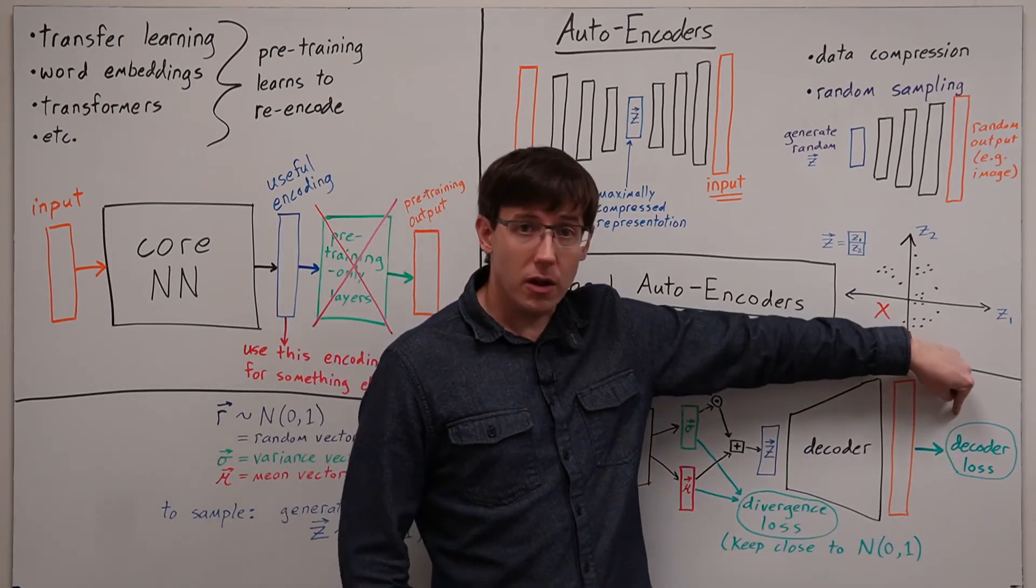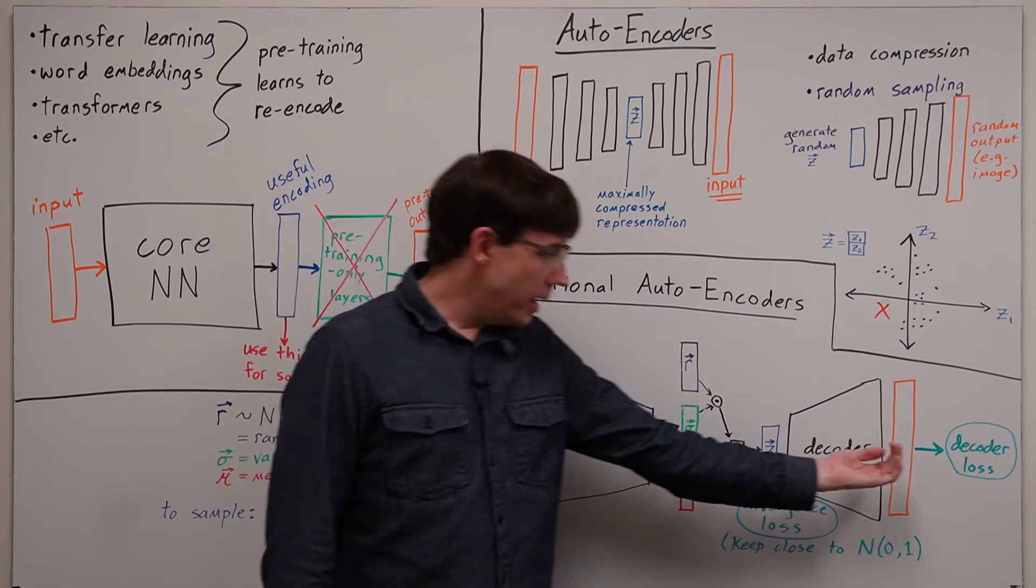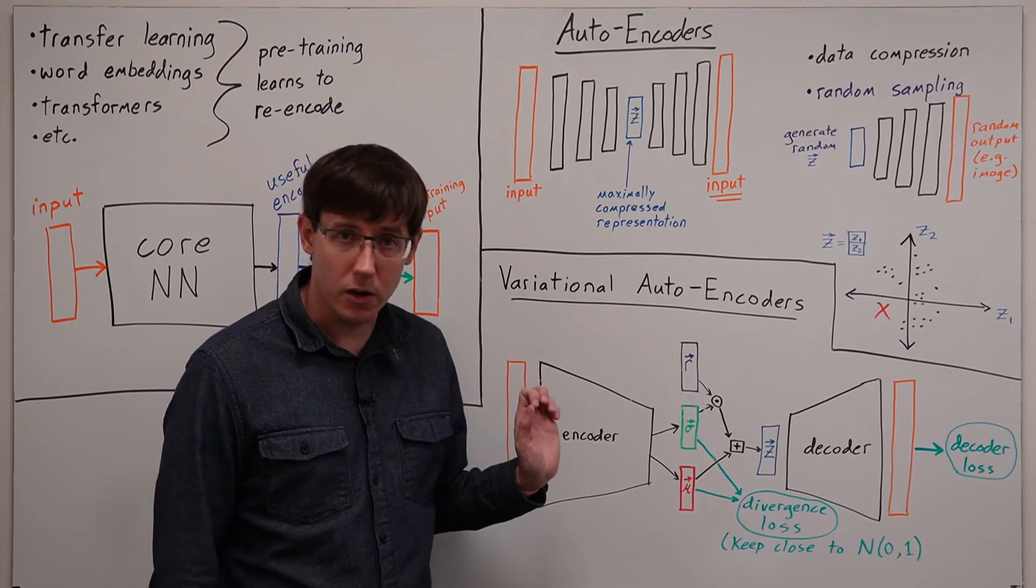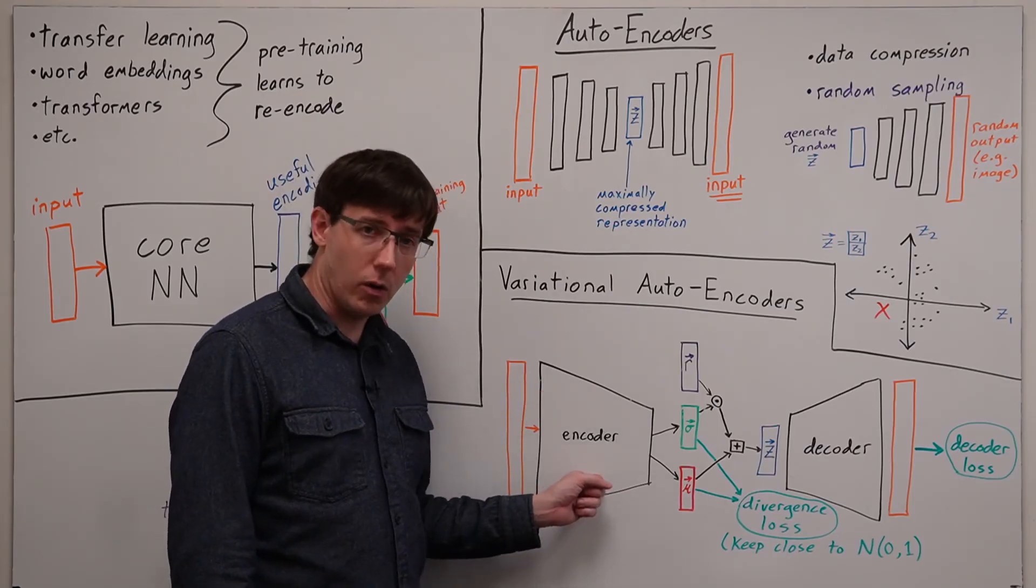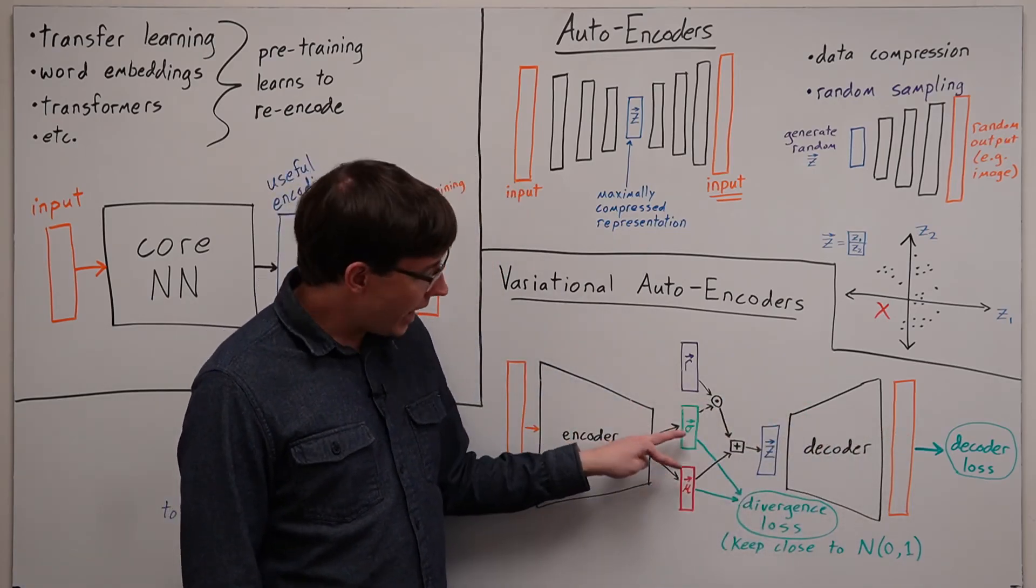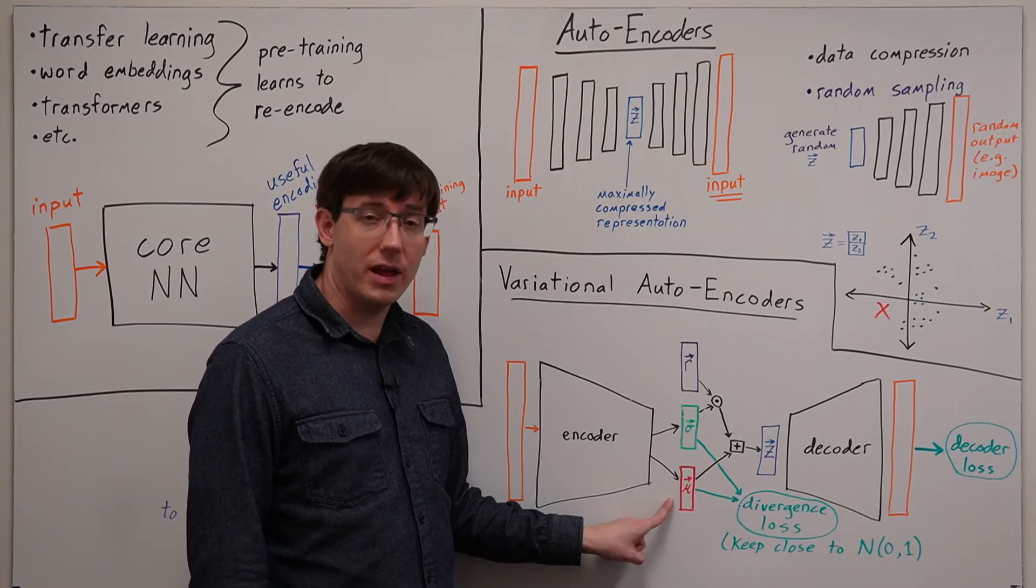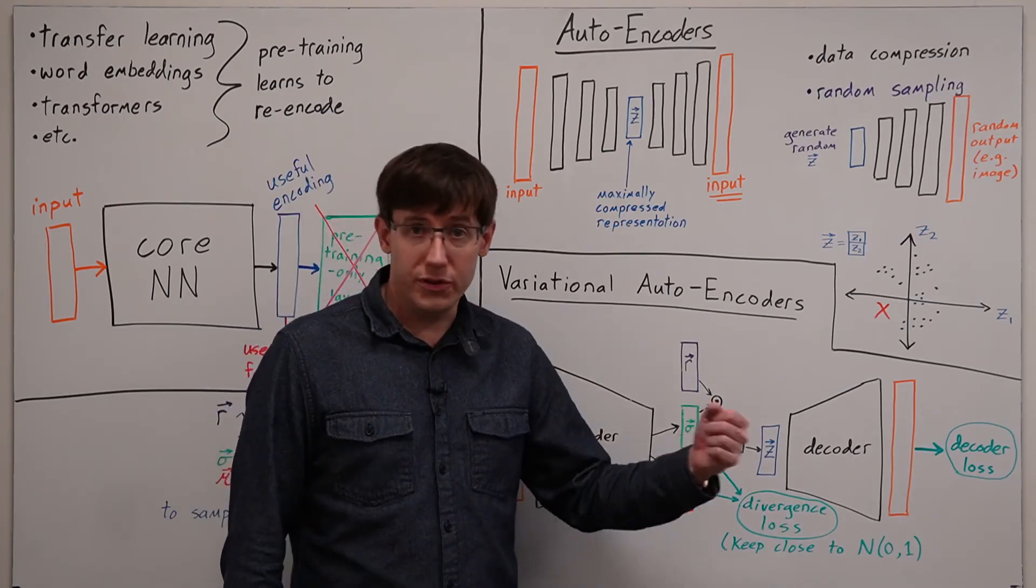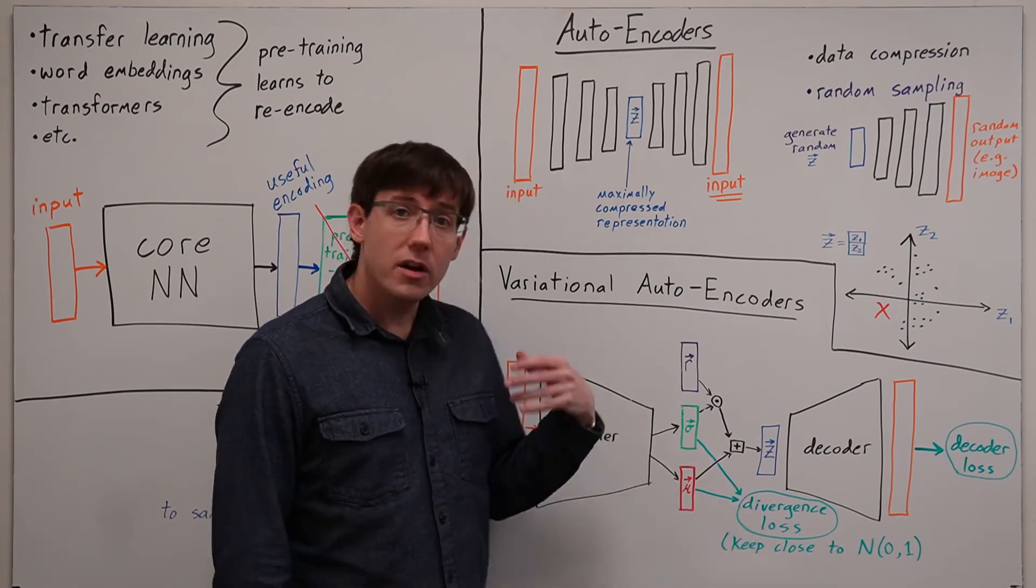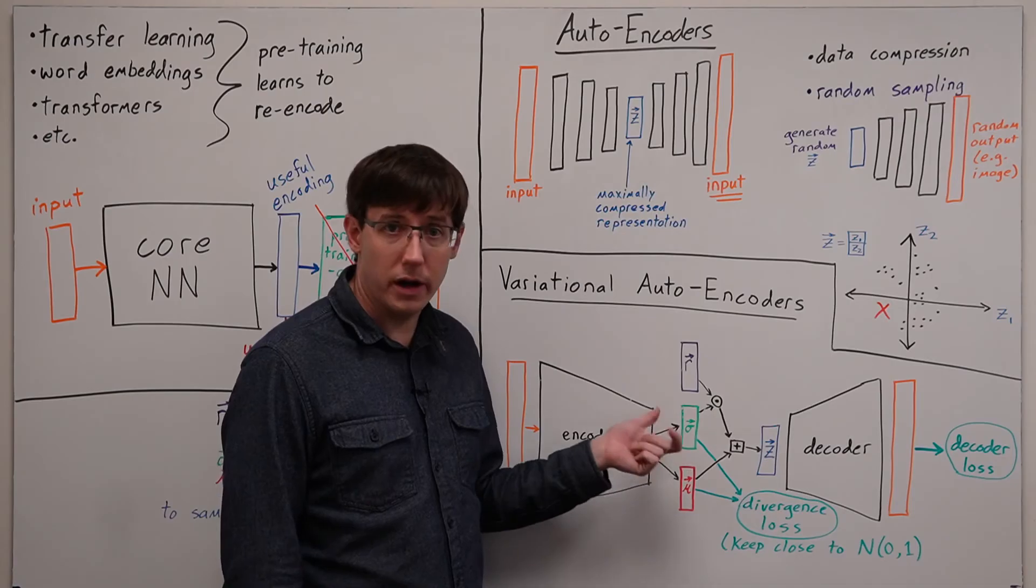When we train this network, the decoder portion has loss that comes from how close it got to reproducing the input, and that decoder loss also passes back and influences the weights in the encoder. But the loss for the encoder network also has a second component that gets added to the decoder loss, and that is a divergence between the mean and variance that it is learning and a normal 0-1 distribution. So this loss is trying to ensure that the encoder doesn't stray very far from outputting a mean of 0 and a variance of 1 on each dimension.